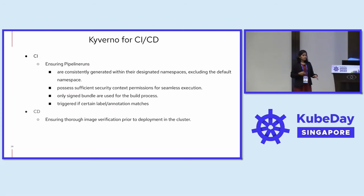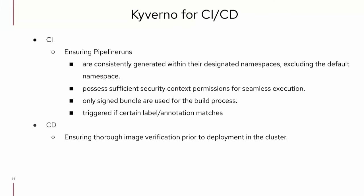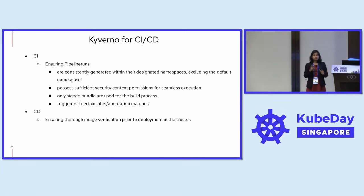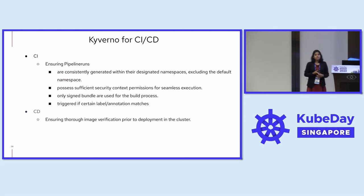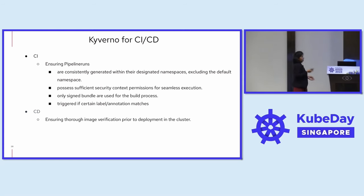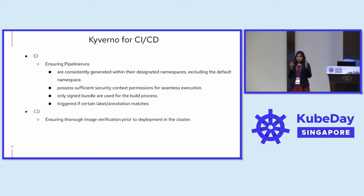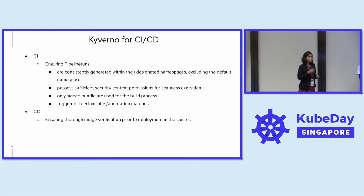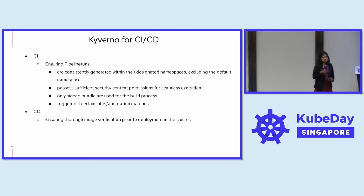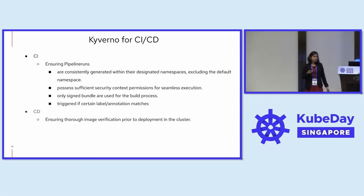For my scenario, how is Kyverno useful for CI/CD? I'm using Tekton for CI and Argo for CD. I want to ensure my pipeline run always has a namespace, my pipeline run obeys the security context permissions, my pipeline run only references a pipeline from a signed bundle, and I want to trigger pipeline runs only if certain labels or annotations match. From the CD side, I want to execute deployment through Argo CD only if the images are verified — specifically, the image signing is verified. That is the major thing I'm focusing on today.